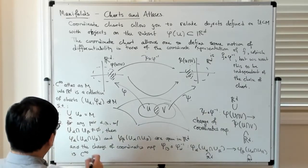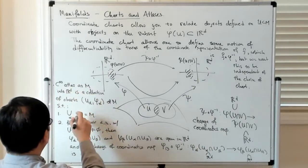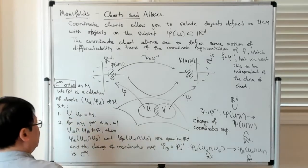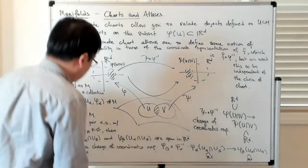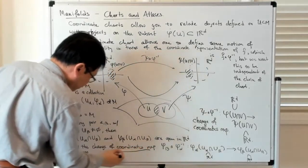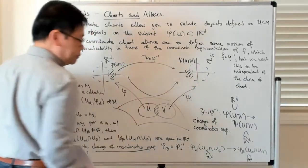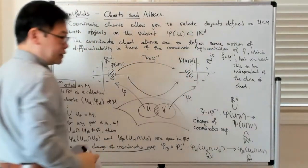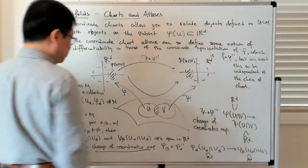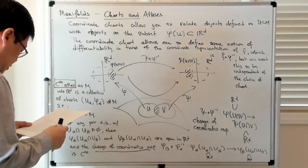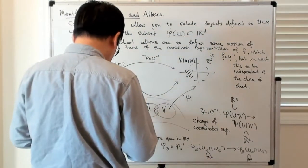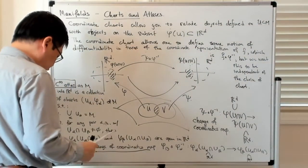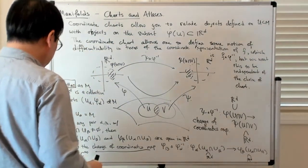So this is the notion of the C-infinity atlas. It has two properties: coordinate charts cover everything, and there is this change of coordinates map — visible in this picture — with the property that the change of coordinate maps is smooth and the inverse is also smooth. So the elements of the atlas overlap smoothly, and the elements of an atlas are of course the charts.